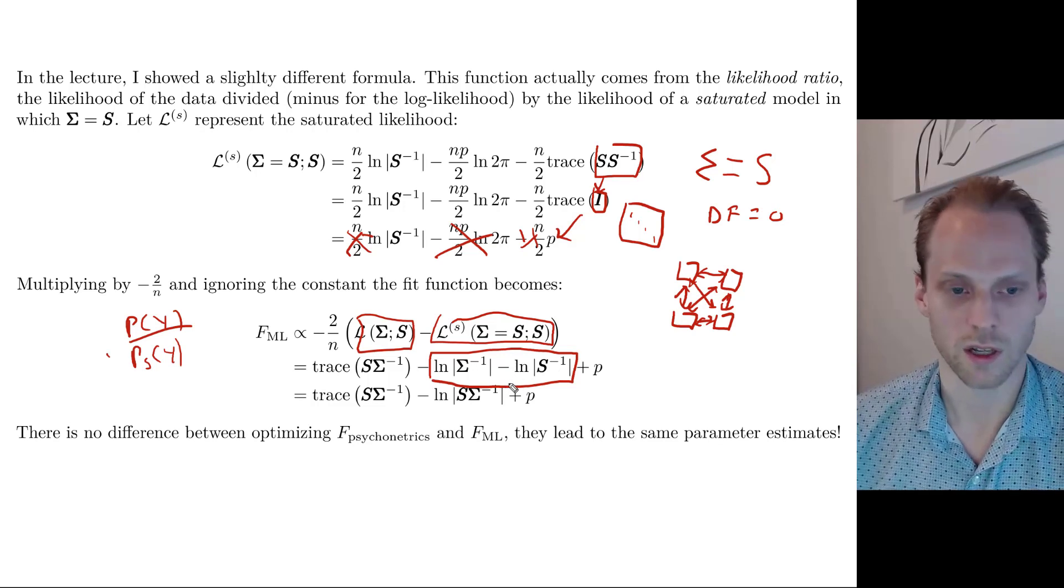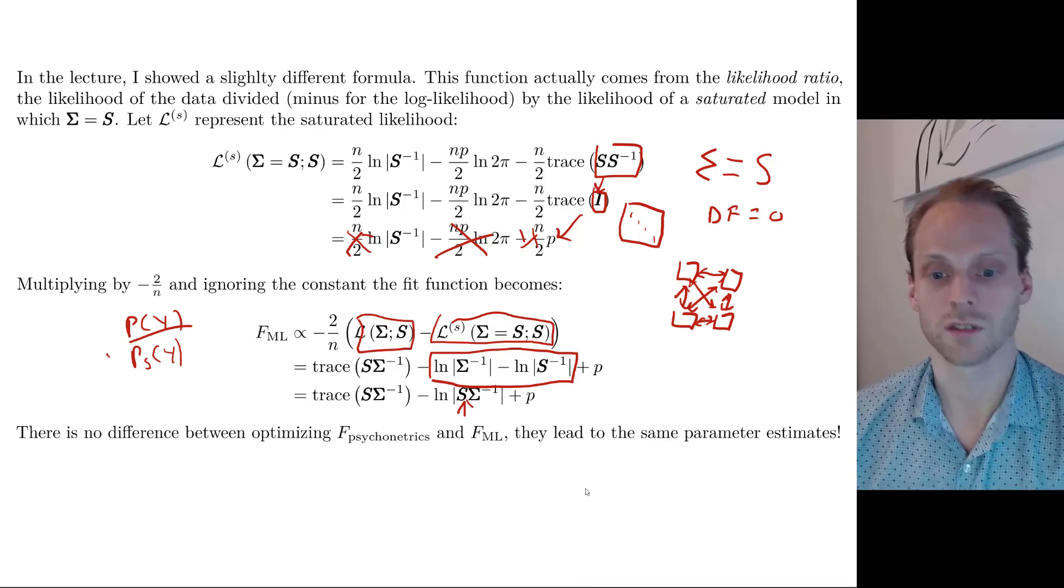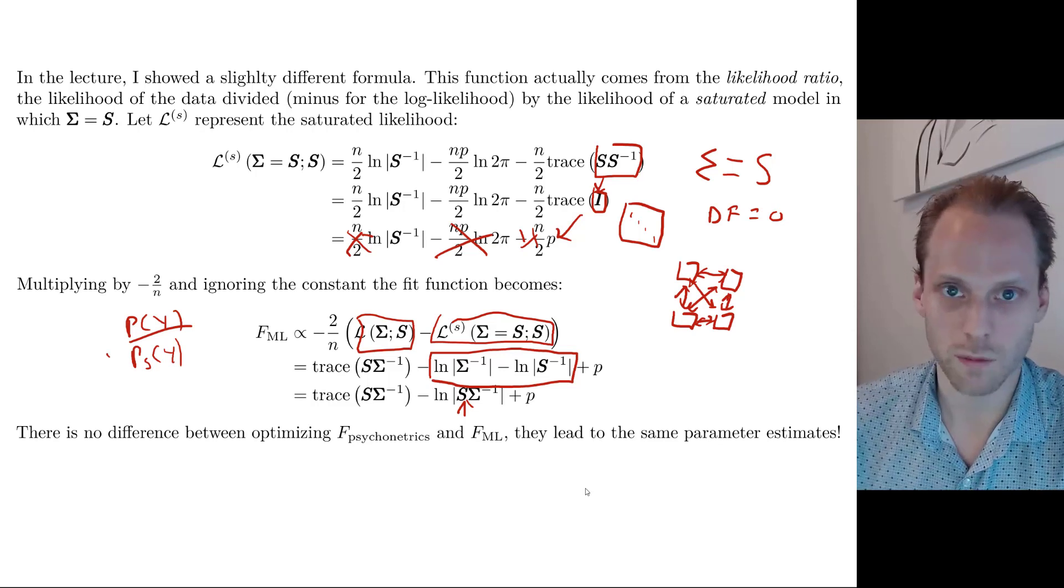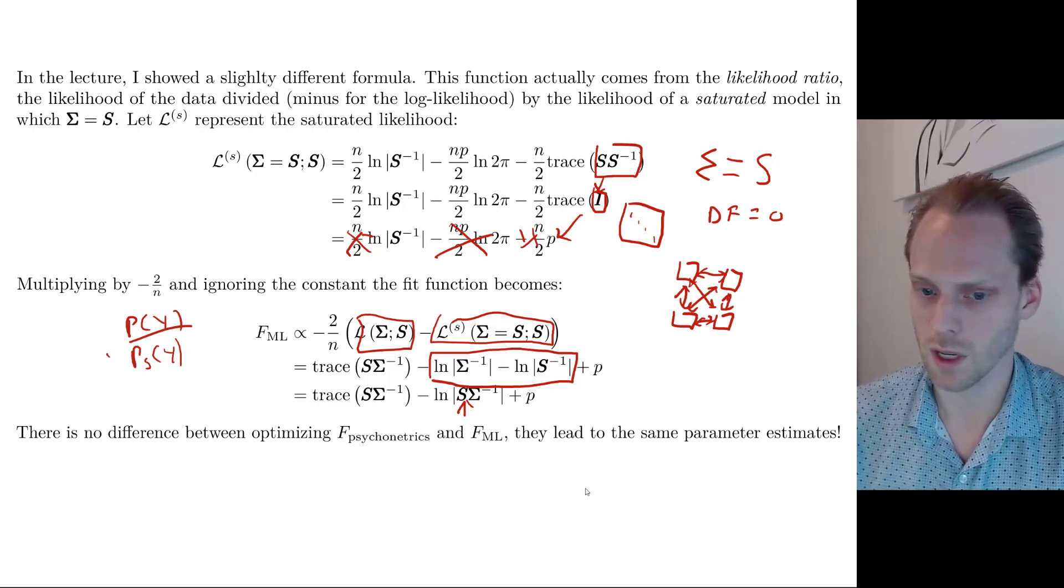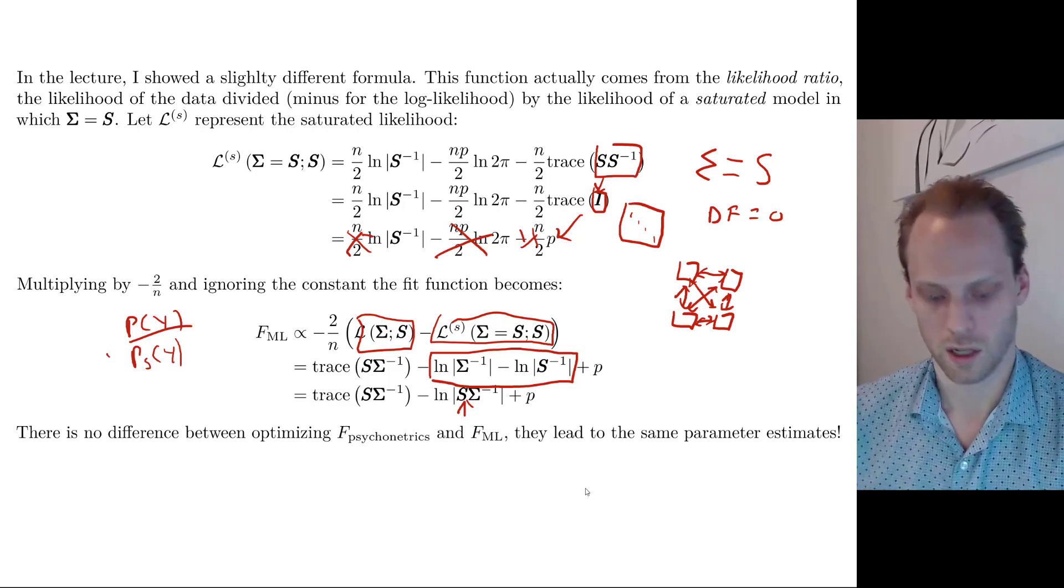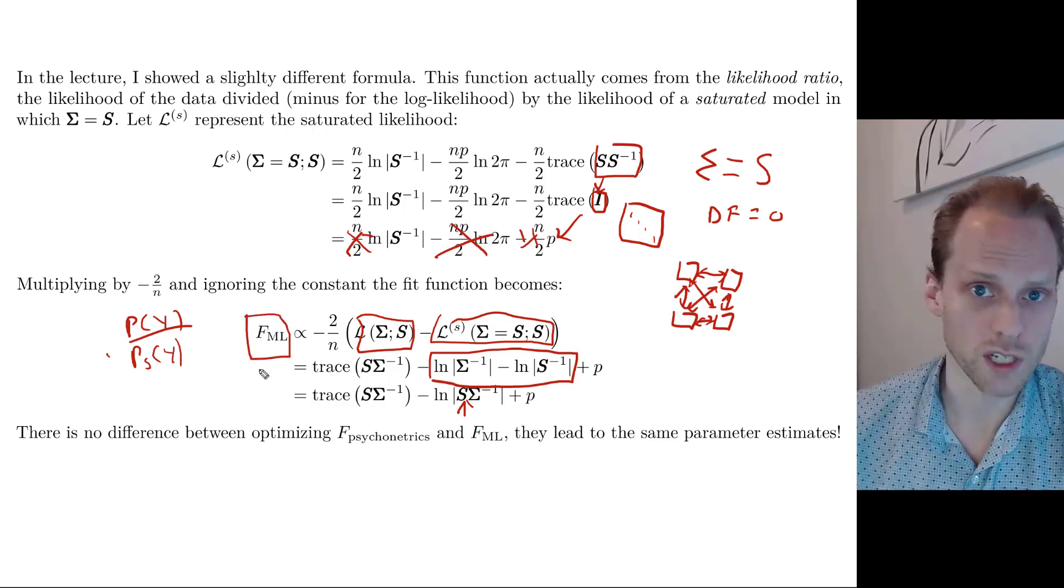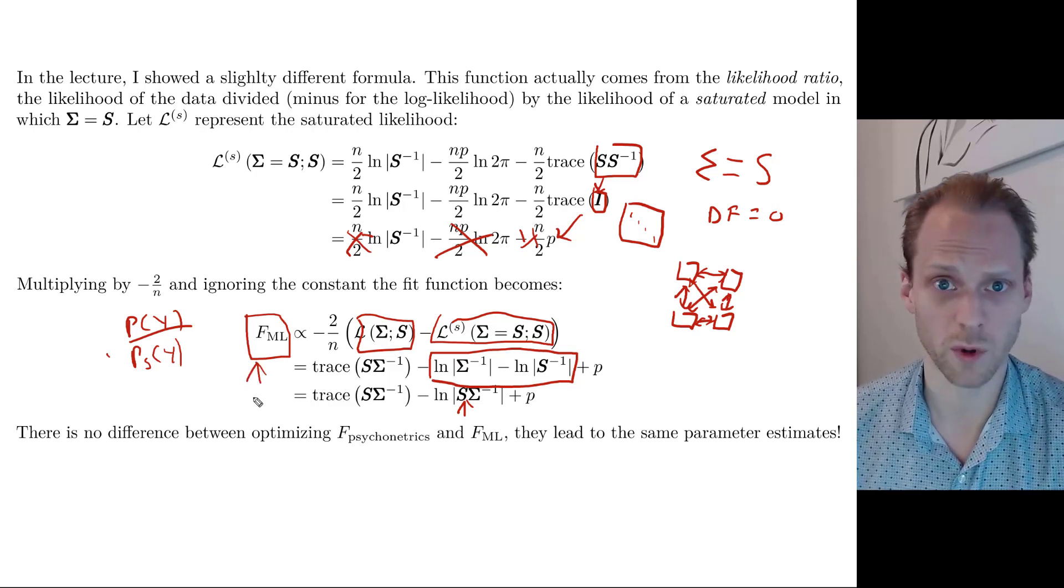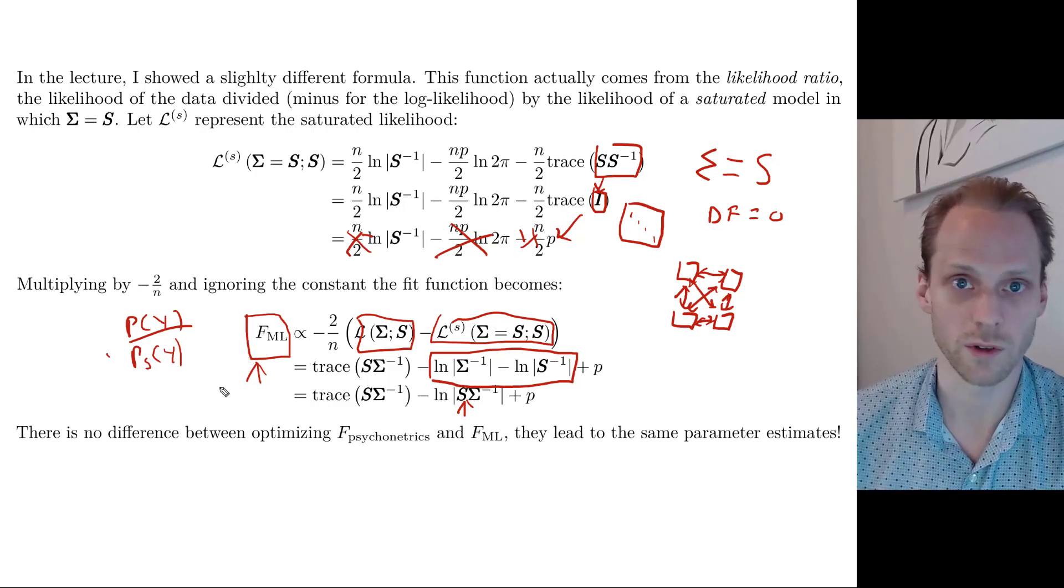Now there's no difference if I optimize this or I optimize the previous function. So I can just put them in an optimizer in R to optimize my parameters and get the maximum likelihood estimates. And also what I'll show later, the derivatives are the same. And the standard errors are also the same. So it doesn't matter. Some software packages use this function. Because this function we can more easily translate to a fit function that is chi-square distributed. So that's why this is usually taught in some courses rather than what I showed on the previous part. Because next week to translate this to a chi-square will be a little bit harder if I would use the psychonetrics fit function.